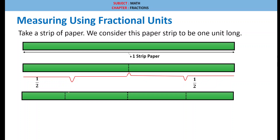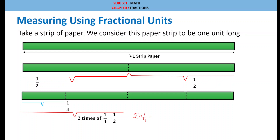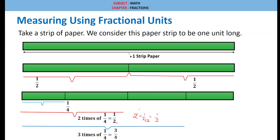Again we are subdividing into half, so this will be one fourth — 1 by 4. Next, two times 1 by 4 equals 1 by 2, because 2 × (1/4) = 1/2. Three times 1 by 4 is 3 by 4. And four times 1 by 4 equals one — which is the full strip of paper.